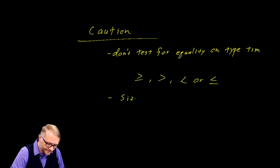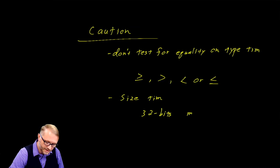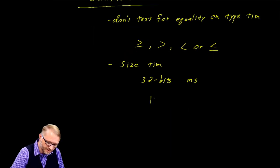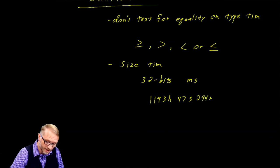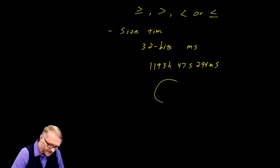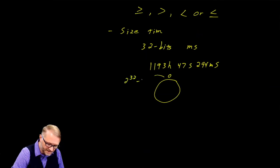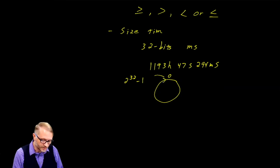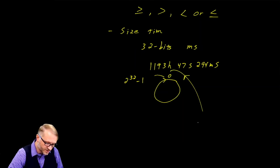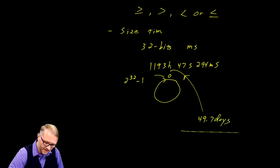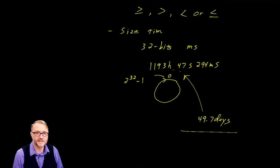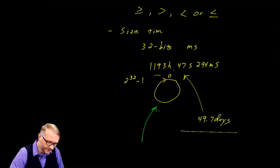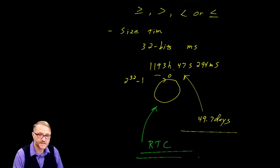Another thing to watch out for is the size of your type time — it's limited. It's only 32 bits and it counts the milliseconds. So if you put it all together, 32 bits allows you to count 1193 hours, 47 seconds, and 294 milliseconds. At that point we have gone all around the circle from zero to the max value of 2 to the 32 minus 1. Once you do that, you wrap. So you can have a program that will malfunction once every about 49.7 days if you're not careful — that would be a very difficult runtime error to troubleshoot. If you find yourself in that situation, I would encourage you to use the real-time clock as it does not suffer these types of problems.